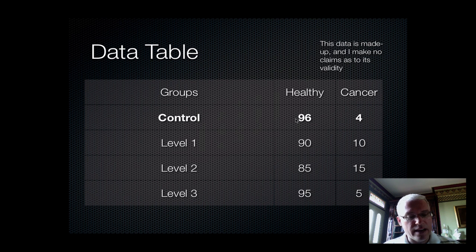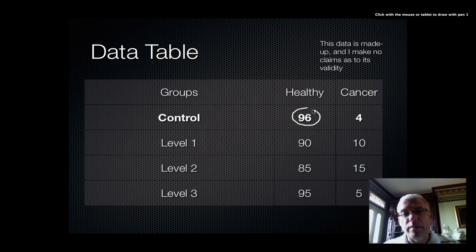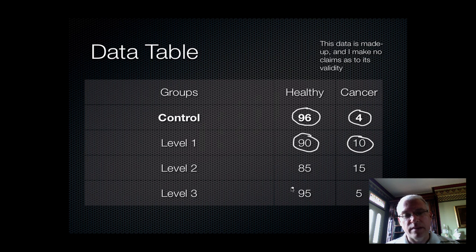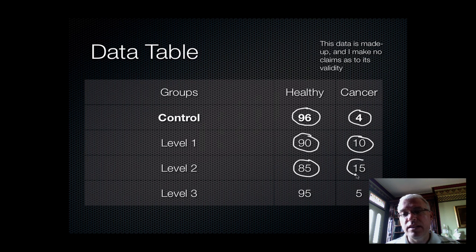In our control group, 96 out of 100 remained healthy and 4 got cancer. In level one — a pack or less a day — 90 stayed healthy and 10 got cancer. For level two — more than a pack a day — 85 were healthy and 15 got cancer, which is the highest number. And in level three — secondhand smoke — 95 remained healthy and only 5 got cancer, which is very close to the control group.